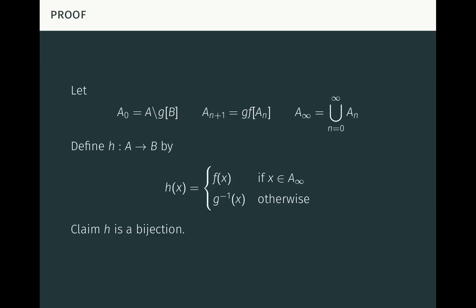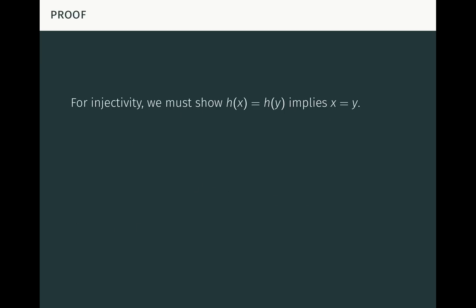Now that we've defined H, all that's left is to verify that H is a bijection, and this is fairly straightforward. For injectivity, we need to show that H of X equal to H of Y implies X equals Y. If X and Y are both in A_infinity, we can appeal to the injectivity of F, because H is defined in terms of F for such points. If X and Y are both not in A_infinity, we can appeal to the injectivity of G, since the injectivity of G implies the injectivity of G inverse, and that's how H is defined for such X and Y.